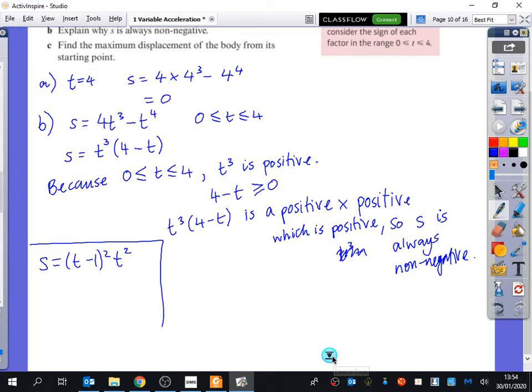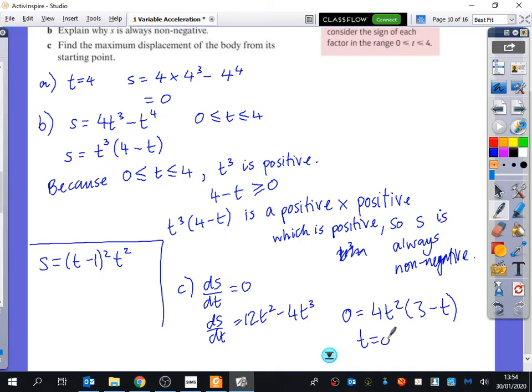Then part C of the question said, find the maximum displacement of the body. So maximum displacement is when ds/dt is equal to zero, when the velocity is zero. So all I'm going to do is differentiate this. So I get that ds/dt is 12t squared minus 4t cubed. And if I want that to be equal to zero, I'm just going to factorise it. What's the highest common factor I can take out? 4t squared. And then I get 3 minus t.